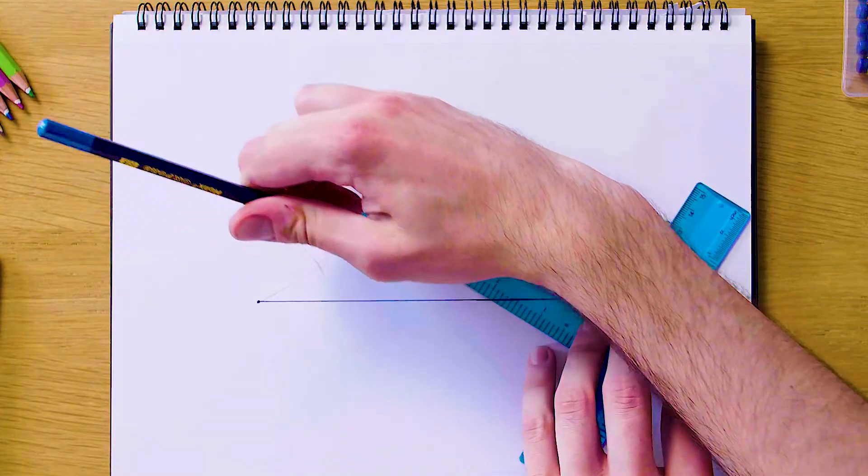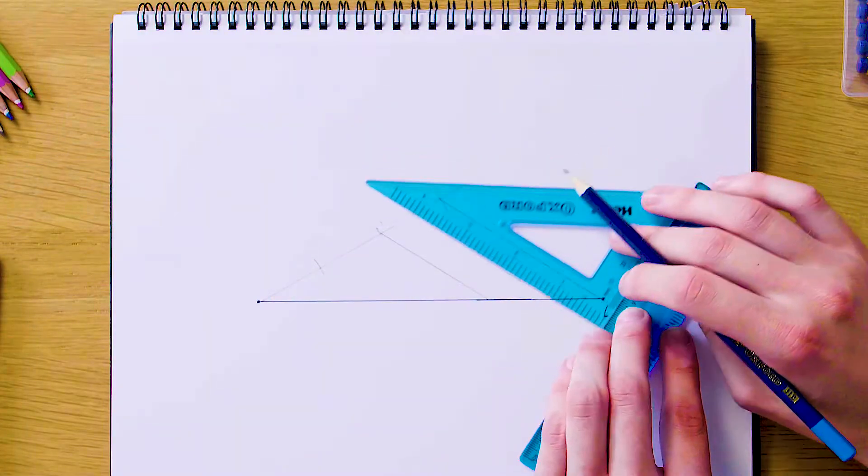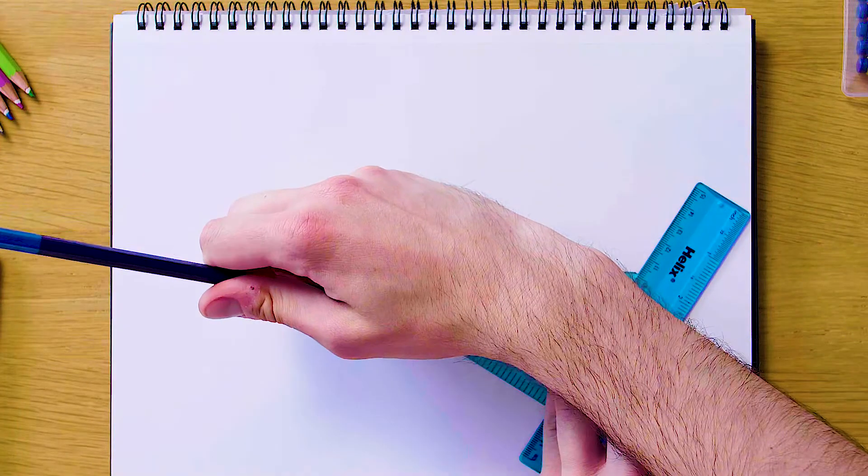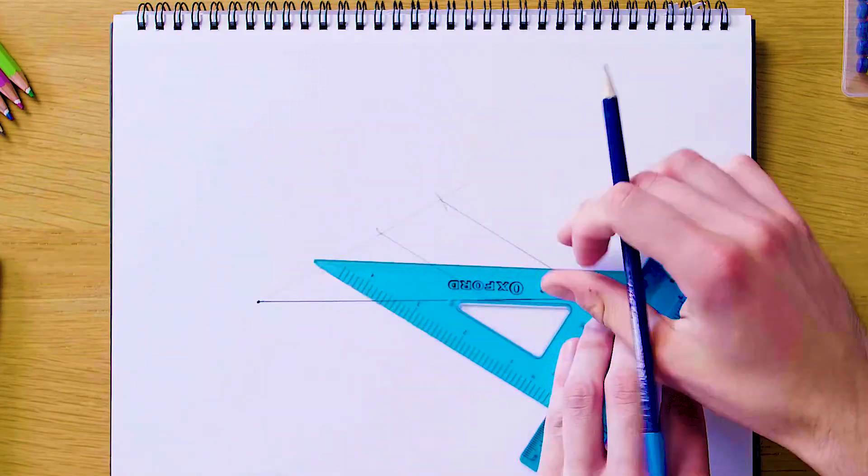So we're just going to use our pencil to draw another line here like this, and then finally move our set square a second time to draw another equal segment, again dividing L.